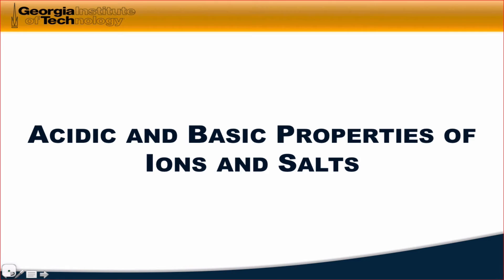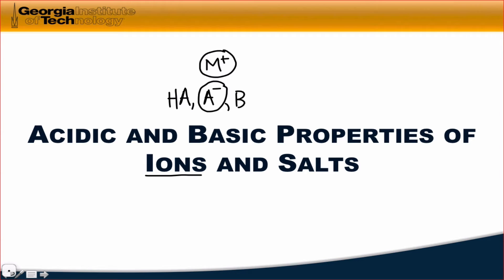So far we've envisioned acids primarily as HA, and bases primarily as either A⁻ or the neutral base form B. In this video I want to clarify how ions can act as acids or bases. We've already seen that anions can act as bases, and I want to introduce the idea that cations can act as acids. We'll also see how salts, which contain a cation and an anion, can act as either acids or bases depending on the relative strengths of M⁺ as an acid and A⁻ as a base.